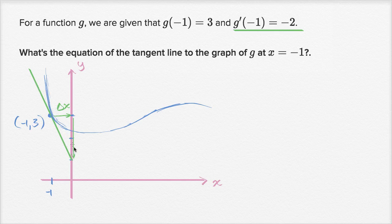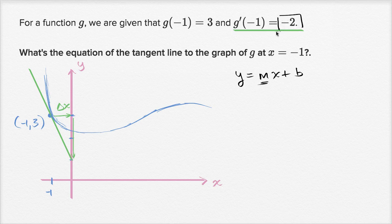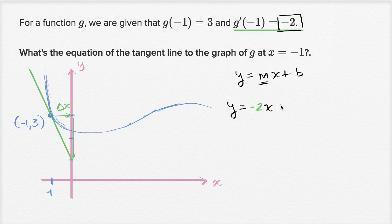All we really care about is the equation for this tangent line. A line generally has the form y equals mx plus b, where m is the slope and b is the y-intercept. We already know the slope of this line is negative two, so y equals negative two times x plus b. To solve for b, we know the point negative one comma three is on this line — going back to some algebra one.